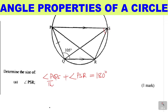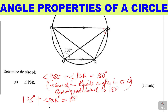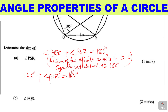The sum of opposite angles in a cyclic quadrilateral is 180 degrees. So when I take angle PQR, which is 105 degrees, plus angle PSR, which is the required angle, I should get 180. Therefore, angle PSR equals 180 degrees minus 105 degrees, which gives 75 degrees. So that is the size of angle PSR.